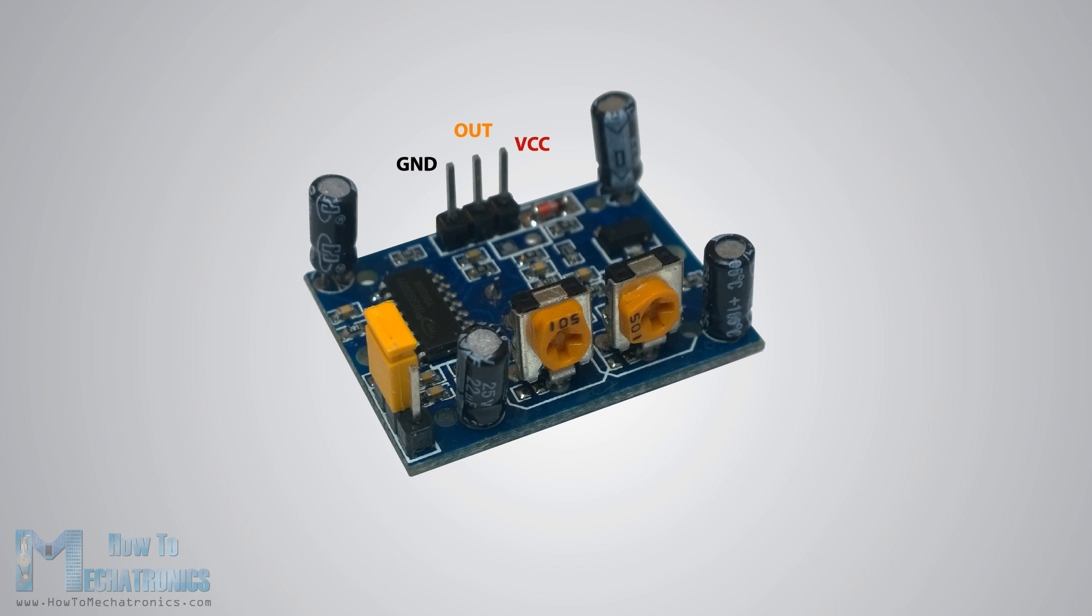Also, it has two potentiometers, one for adjusting the sensitivity of the sensor and the other for adjusting the time the output signal stays high when the object is detected. This time can be adjusted from 0.3 seconds up to 5 minutes.